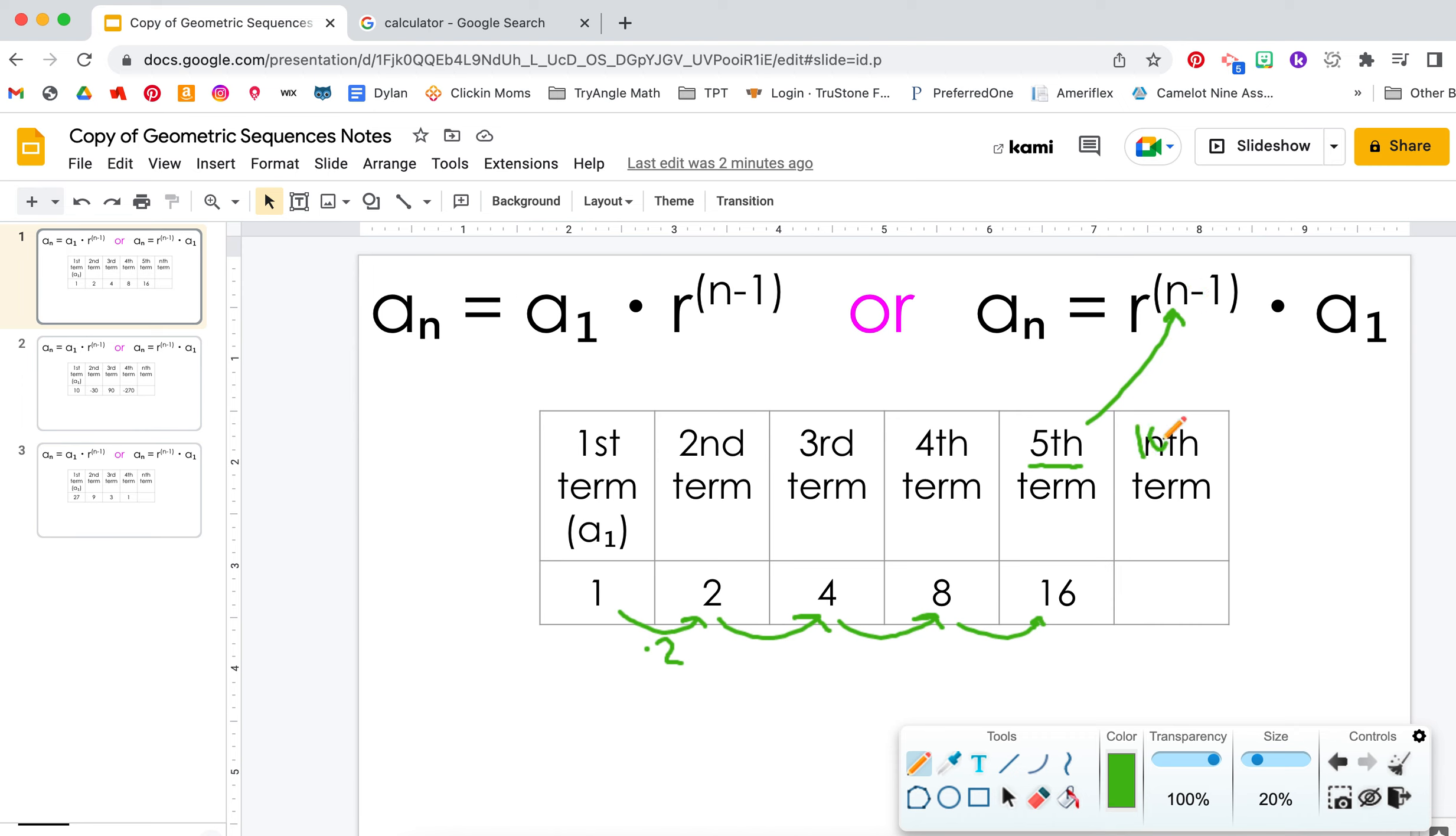So let's say we are solving for the 10th term. We would have to multiply by 2 nine times. So our equation would be A sub n, which we can actually replace the n with 10 if we're solving for that 10th term.